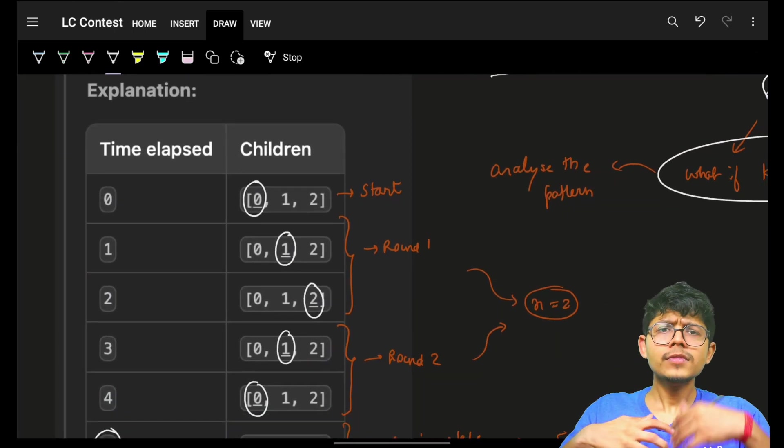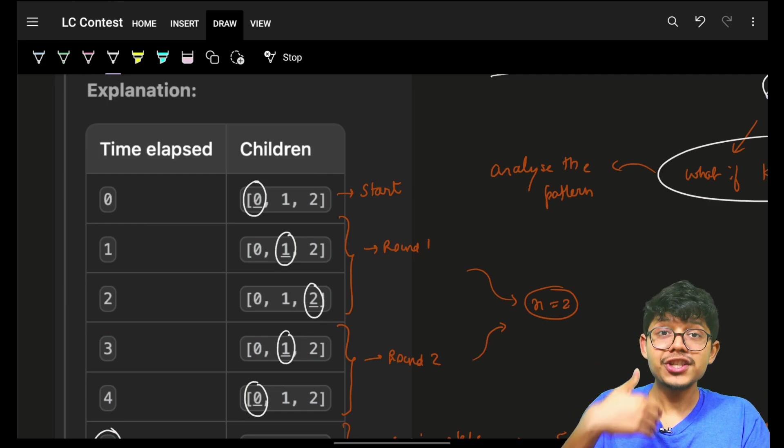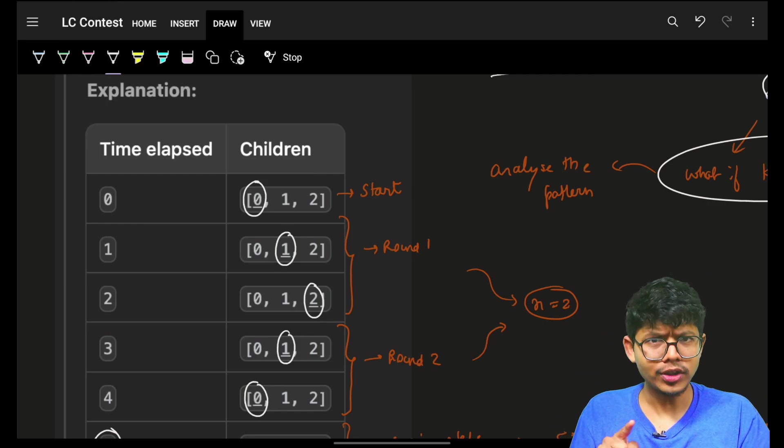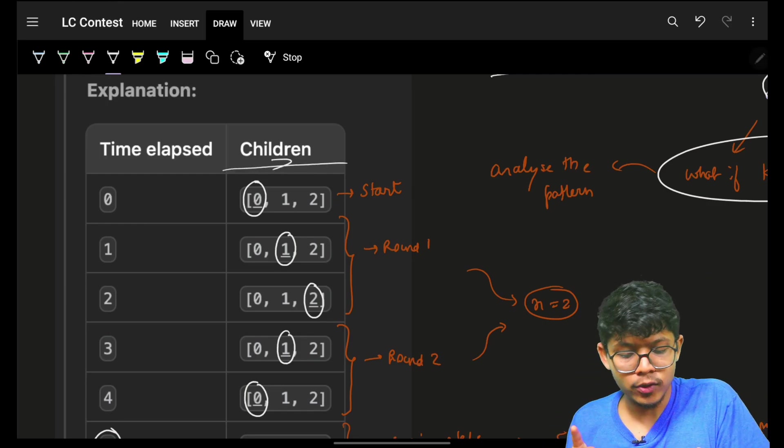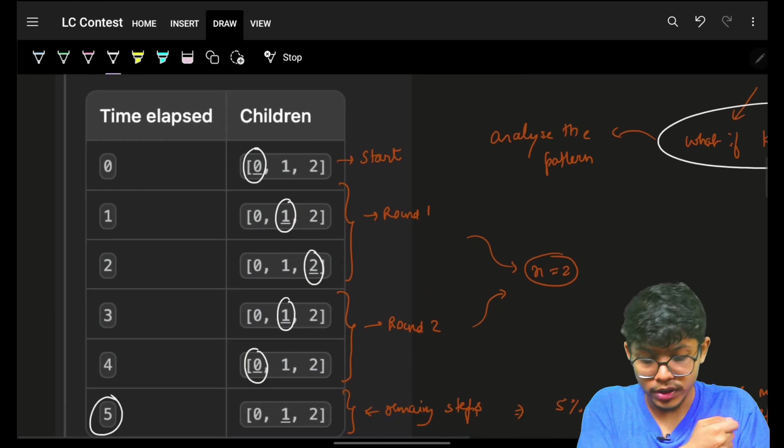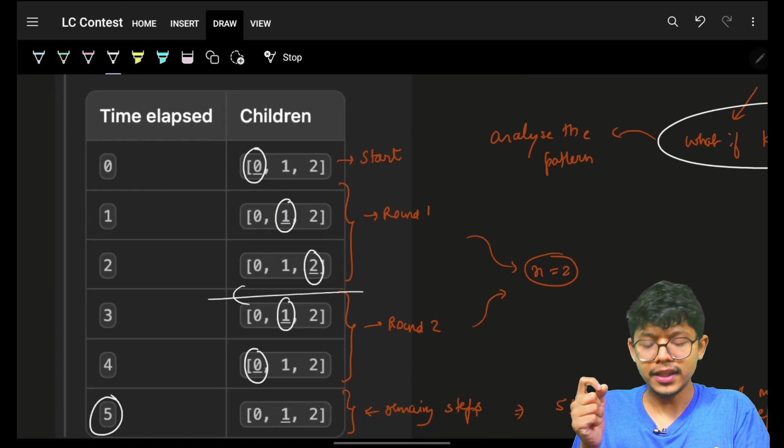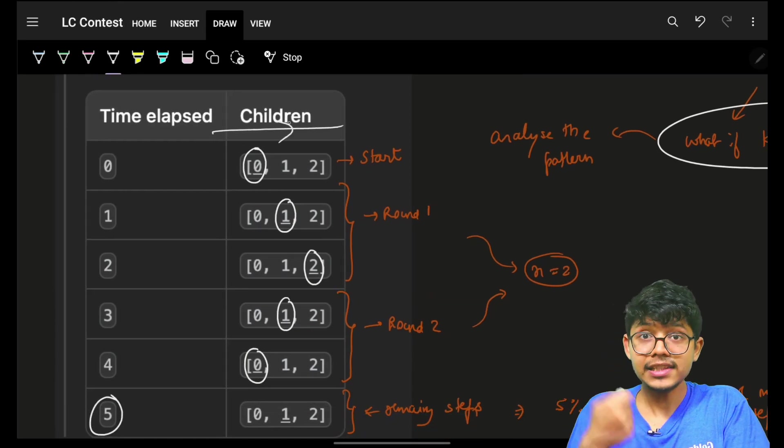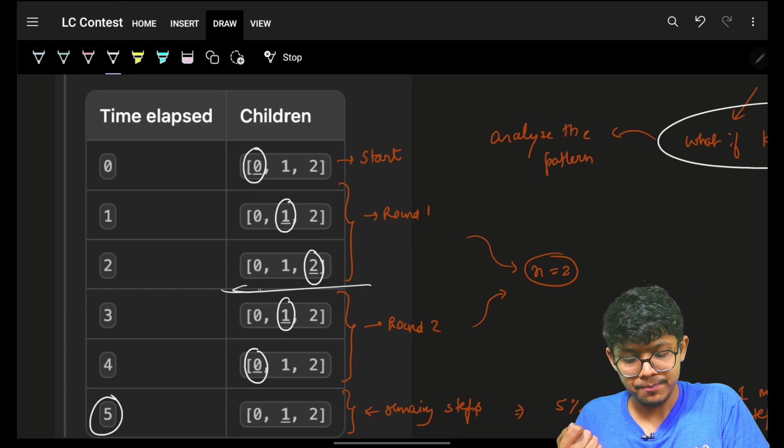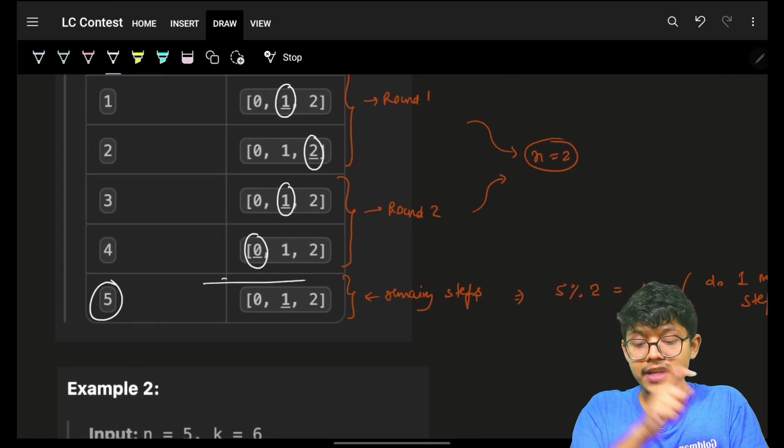Which means, you just have to tell which round it is for the person. Because, in the first round, he is moving left. In the next round, he is moving right. Sorry, in the first round, he is moving right. In the next round, which is round 2, he is moving left. Then, in the next round, he is again moving right.